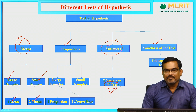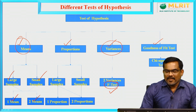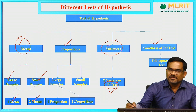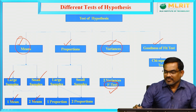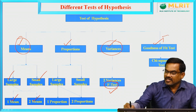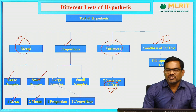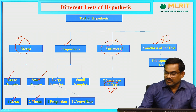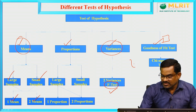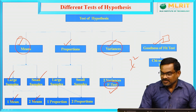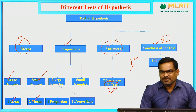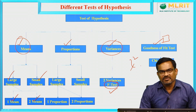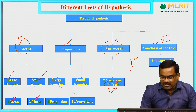Similarly, in the goodness of fit test, practical data always follows a theoretical distribution. In this test, we check whether the given data fits a theoretical distribution — such as binomial, Poisson, or normal distribution. For the goodness of fit test, we use the chi-square distribution. We find the expected frequencies, then use both observed and expected frequencies to calculate the test statistic, and finally compare with the tabular value to take the final decision. These are the different types of tests we are going to discuss in upcoming sessions.